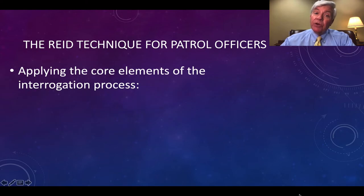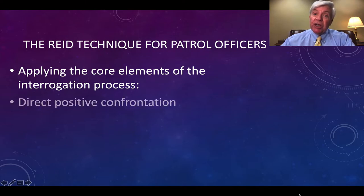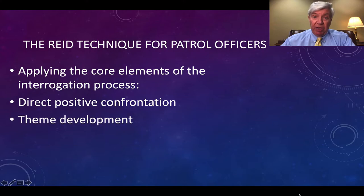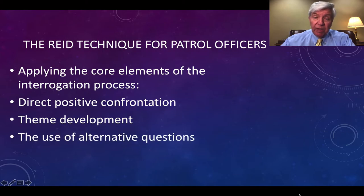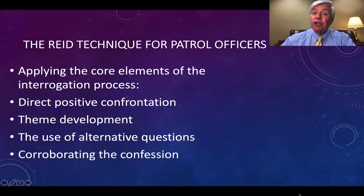And then we're going to talk about the key elements of the interrogation process: how to initiate the interrogation, how to develop the theme in which we offer the subject psychological justification for committing the crime, how to use alternative questions to develop the initial admission of guilt, and how to corroborate the confession.